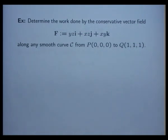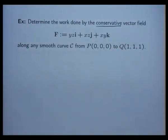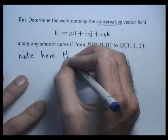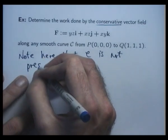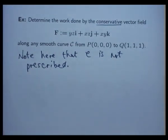Now note that I'm kind of giving the game away a little bit there by saying conservative here, but in practice what we'd like to do here is set up a potential function. So an important thing to note here that C is not prescribed. It could be any path between P and Q.